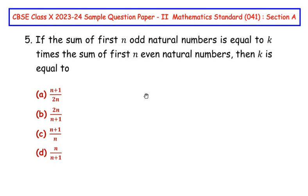This question is from the arithmetic progressions chapter. If the sum of first n odd natural numbers is equal to k times the sum of first n even natural numbers, then k is equal to? These are the four options given. I'm going to use a different approach - I'm going to take some odd numbers and even numbers and try to form an equation.